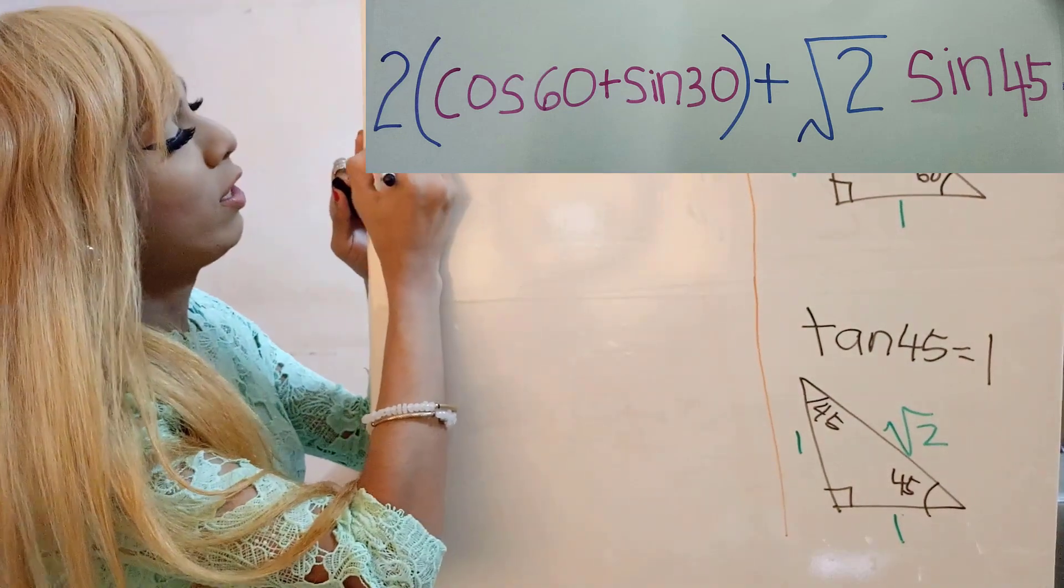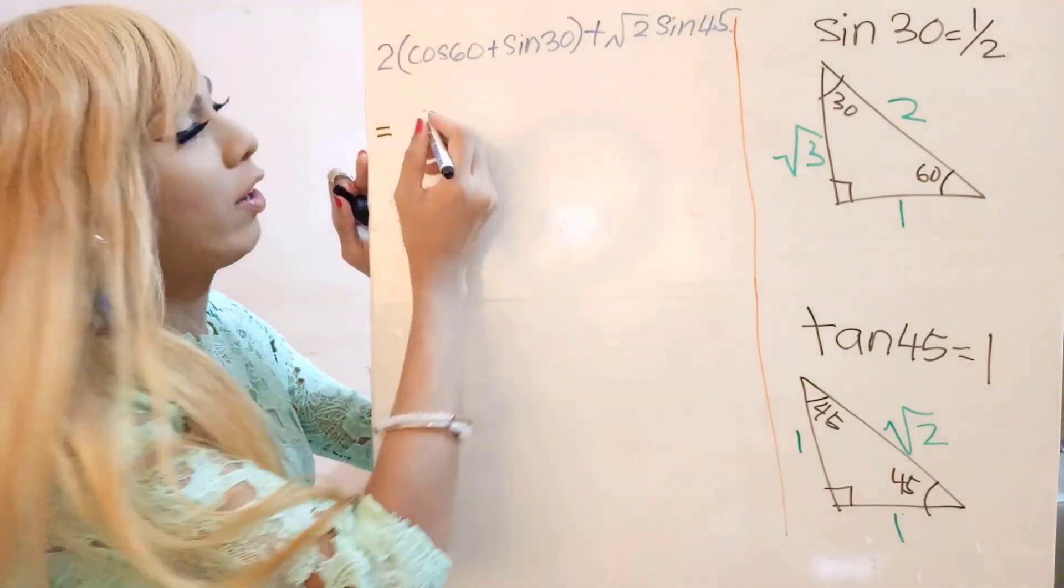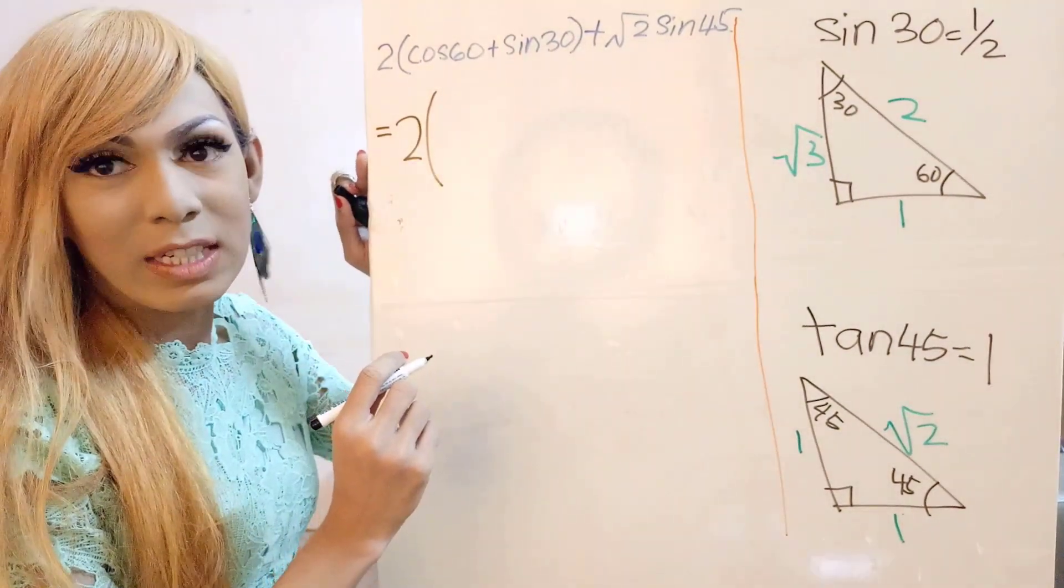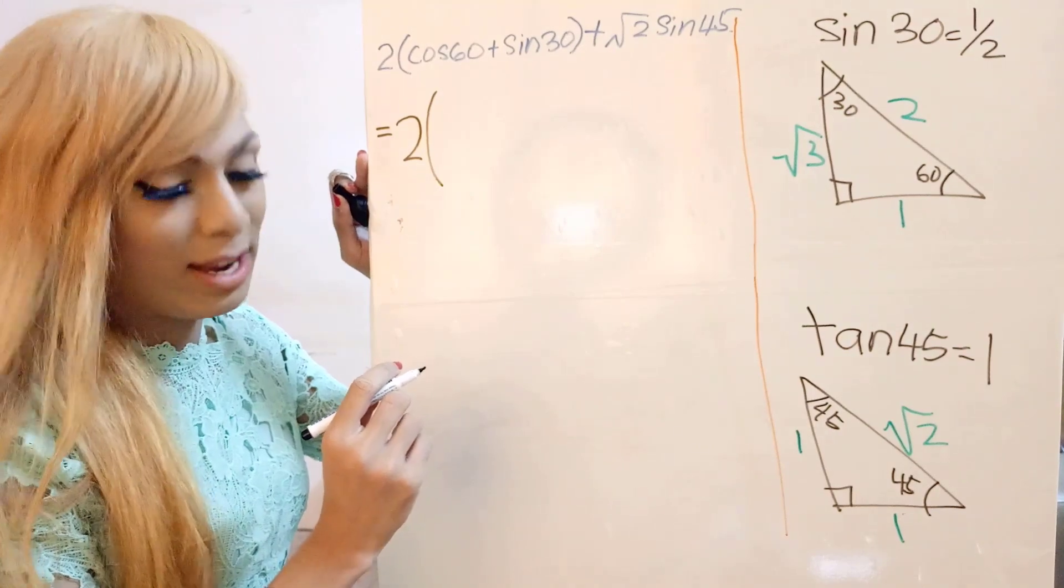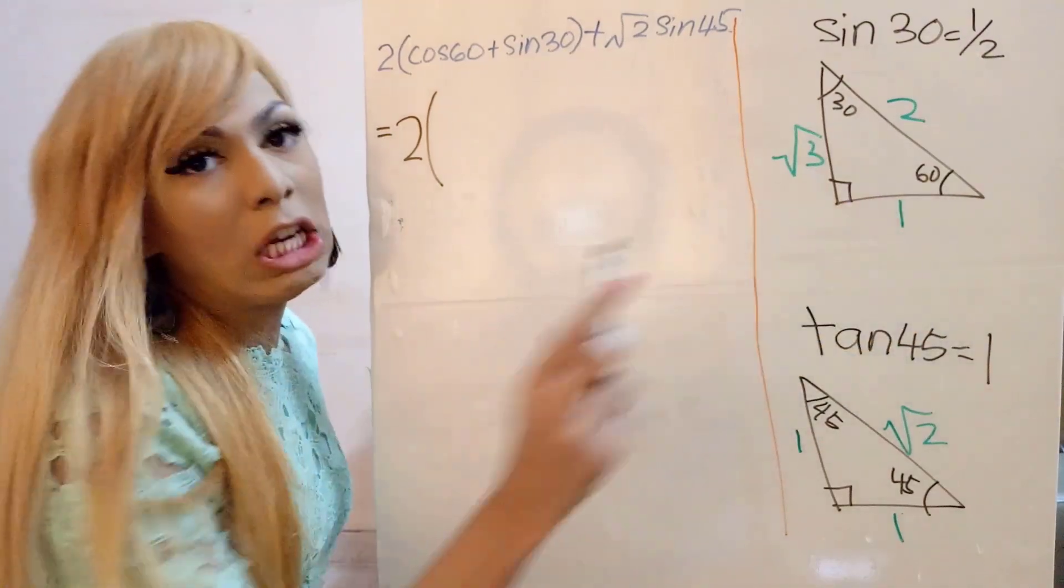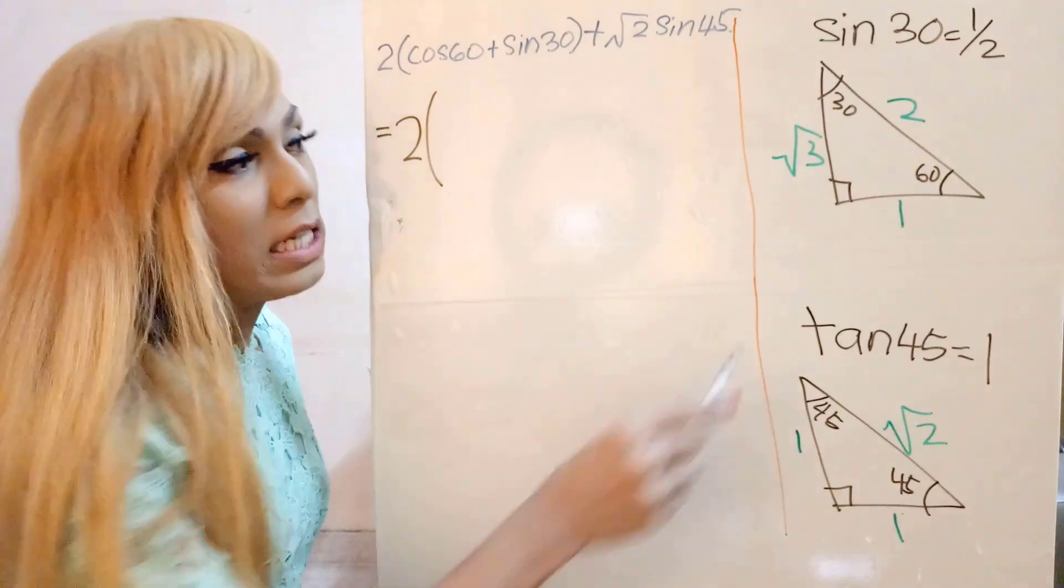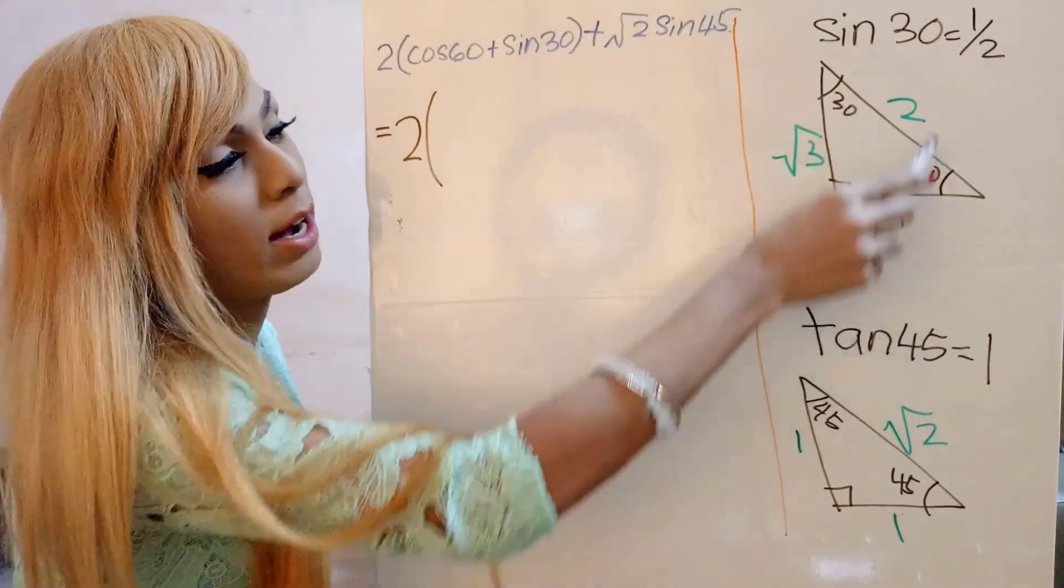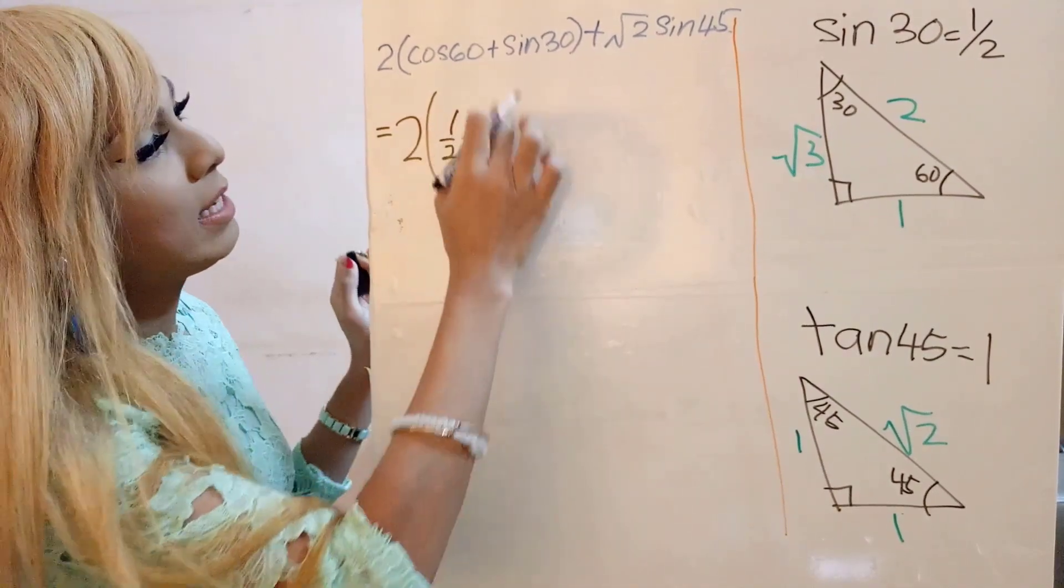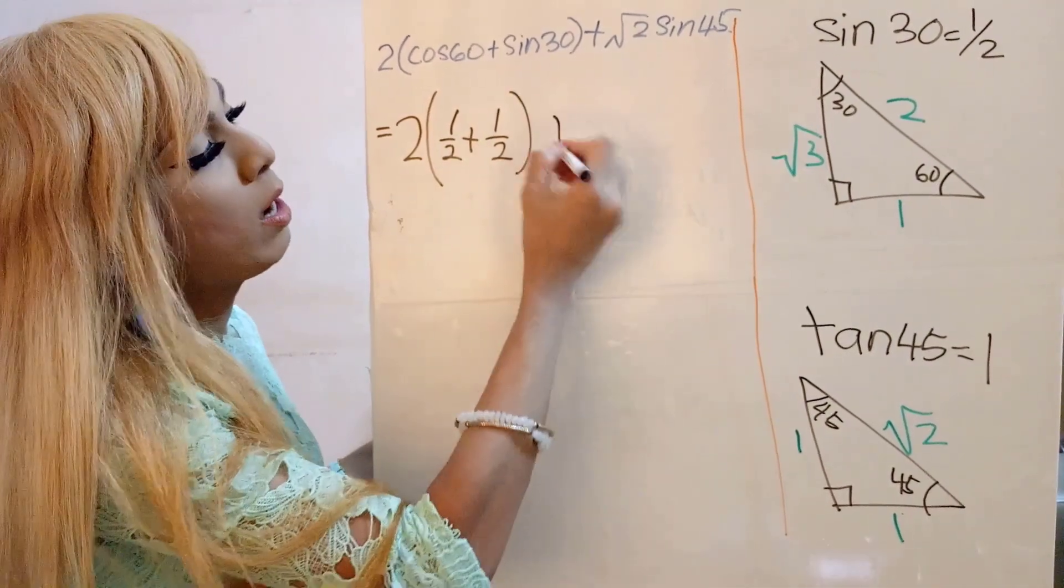So for this one, I bring down this 2. So it's going to be 2. And then I bring the bracket down as well. So for cos 60, again, cos is CAH, which is adjacent over hypotenuse. So for this, adjacent is 1 and hypotenuse is 2. So it's going to be 1 over 2. Plus sine 30. Sine 30, you already remember, which is 1 over 2.